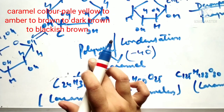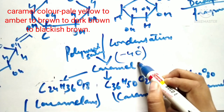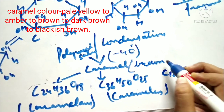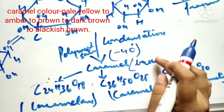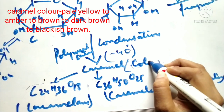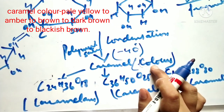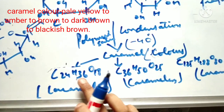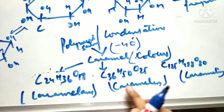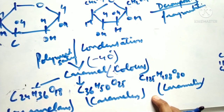With the process of polymerization, there is formation of caramel, and this caramel is responsible for the color. There are three types of caramels formed: caramelans, caramelens, and caramelins.